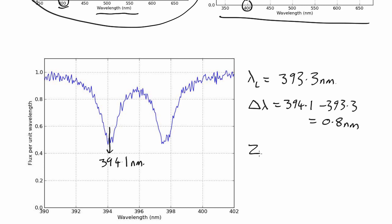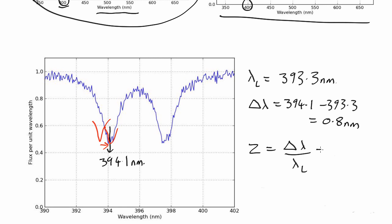The redshift, written as z, is defined as delta lambda over the lab wavelength. So that's 0.8 over 393.3, which is 0.002. That's our redshift.